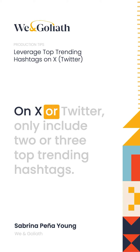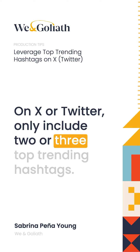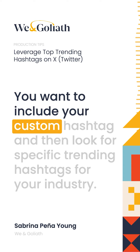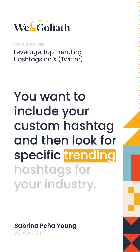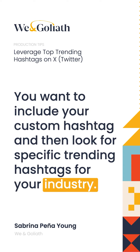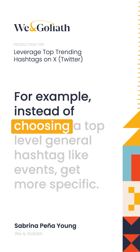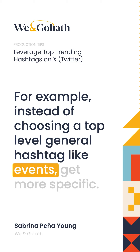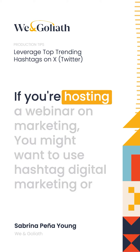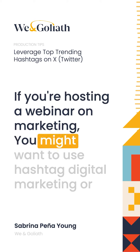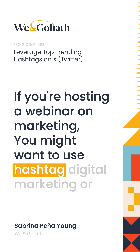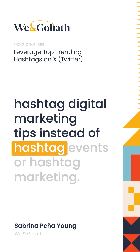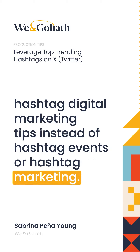On X or Twitter, only include two or three top trending hashtags. You want to include your custom hashtag and then look for specific trending hashtags for your industry. For example, instead of choosing a top-level general hashtag like #events, get more specific. If you're hosting a webinar on marketing, you might want to use #digitalmarketing or #digitalmarketingtips instead of #events or #marketing.